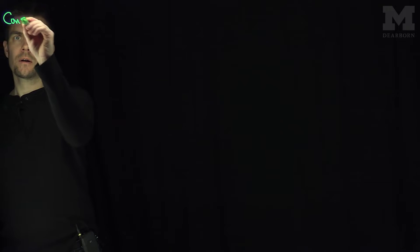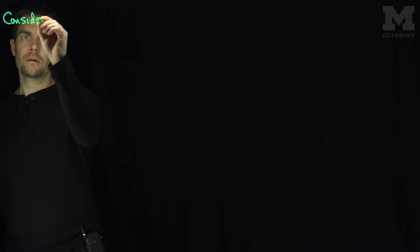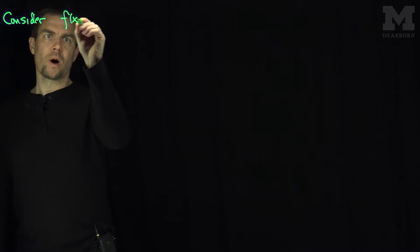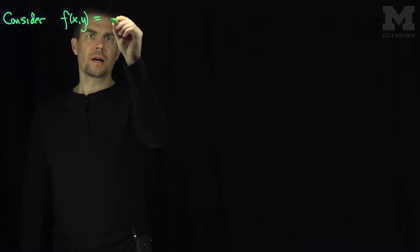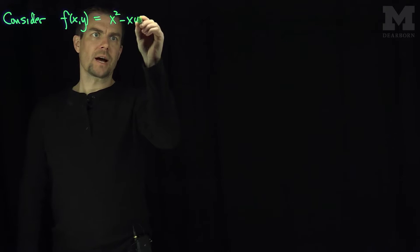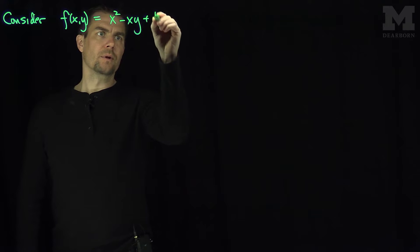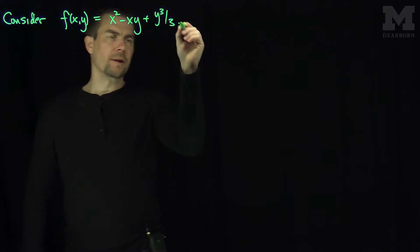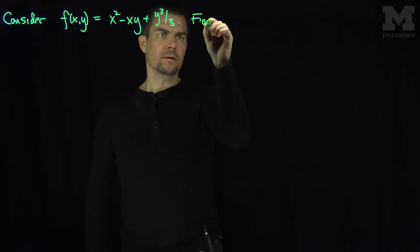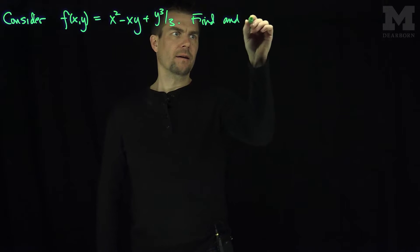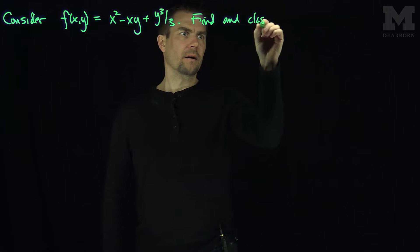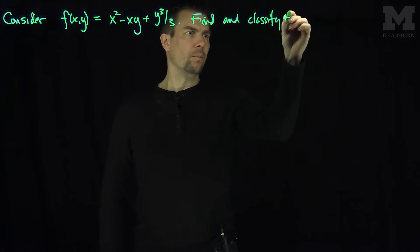Hello students. In this video we'll see an example of finding and classifying the critical points of a function of two variables. Let's consider f(x,y) = x² - xy + y³/3, and find and classify the critical points.